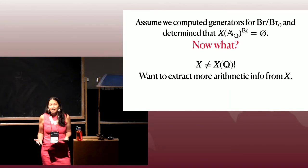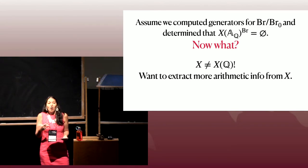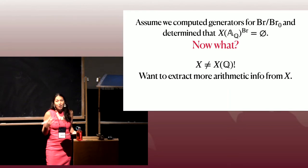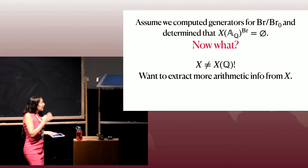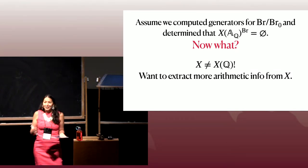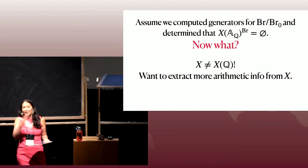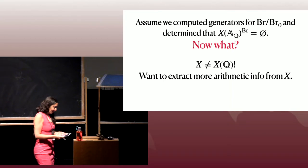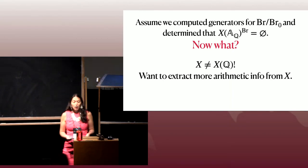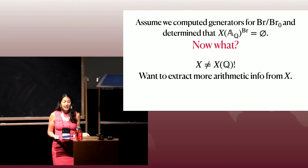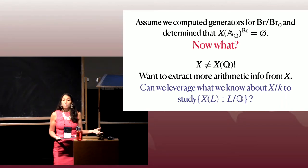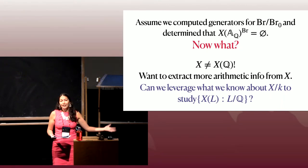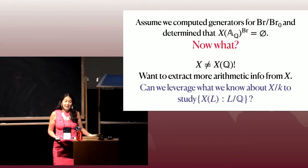One thing we know from varieties is that they're not just their set of Q-rational points, particularly when the set is empty. There's more information contained in X than the set of Q-rational points. If you're interested in the arithmetic of X, you really want to understand all of the arithmetic of X — ideally all of the Q-bar points, the Galois actions on them, and what they look like. What I want to think about today is a question in a different direction: can we leverage the information we've learned about X over our ground field and try to extract information about what's happening over extensions?